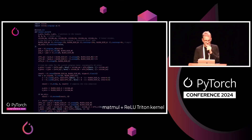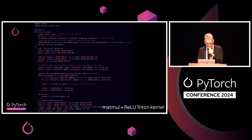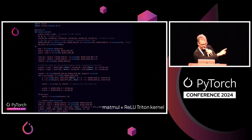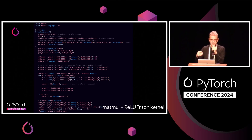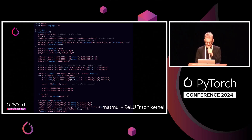Say we have this nice MatMul kernel in Triton. This comes from the Hello World in Triton tutorials, with one exception: we fused the ReLU. If you look at `if do_relu: result = maximum` — that's the ReLU. So we fused the ReLU within the kernel, and now we have a MatMul plus ReLU kernel that is fused. This is pure Triton.